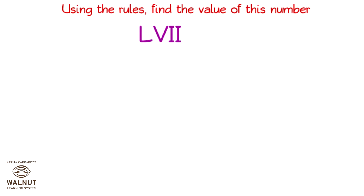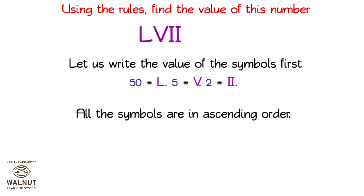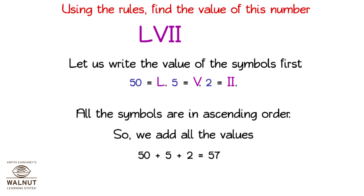L, V followed by 2 I's. Let us write the value of this symbol first. 50 is L, 5 is V and 2 is two I's. All the symbols are in ascending order, so we add all the values. 50 plus 5 plus 2 is equal to 57. So L, V and 2 I's is equal to 57.